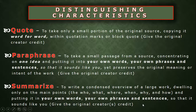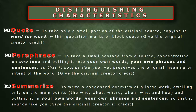To summarize is to write a condensed overview of a large work, dwelling only on the main points — the who, what, where, when, why, and how — and putting it in your own words, your own phrases and sentences, so that it sounds like you. Make sure you give credit to the original source. I really think that paraphrasing and summarizing takes practice. For me it doesn't come naturally, but it's a very, very good skill — one you can use for the rest of your life.